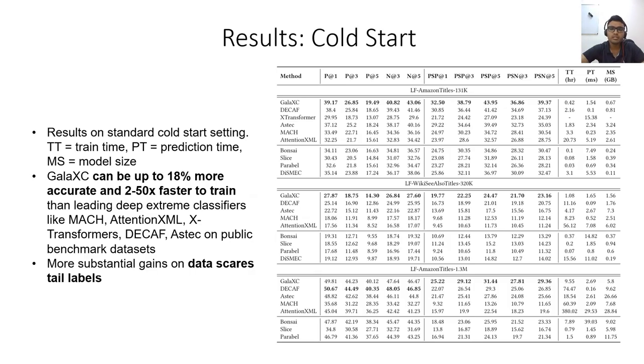Let us now look at some results. This slide presents the results on standard cold-start scenario where predictions are to be made on novel test documents. LF Amazon Titles 131k and LF Amazon Titles 1.3 million are product-to-product recommendation datasets created by mining the bought-together logs from Amazon. LF Wiki SEO-Also Titles 320k dataset is created by mining the SEO-Also section from Wikipedia pages. So for a Wikipedia page, its title is taken as a document and the Wikipedia pages mentioned in the SEO-Also section of the page become the labels.